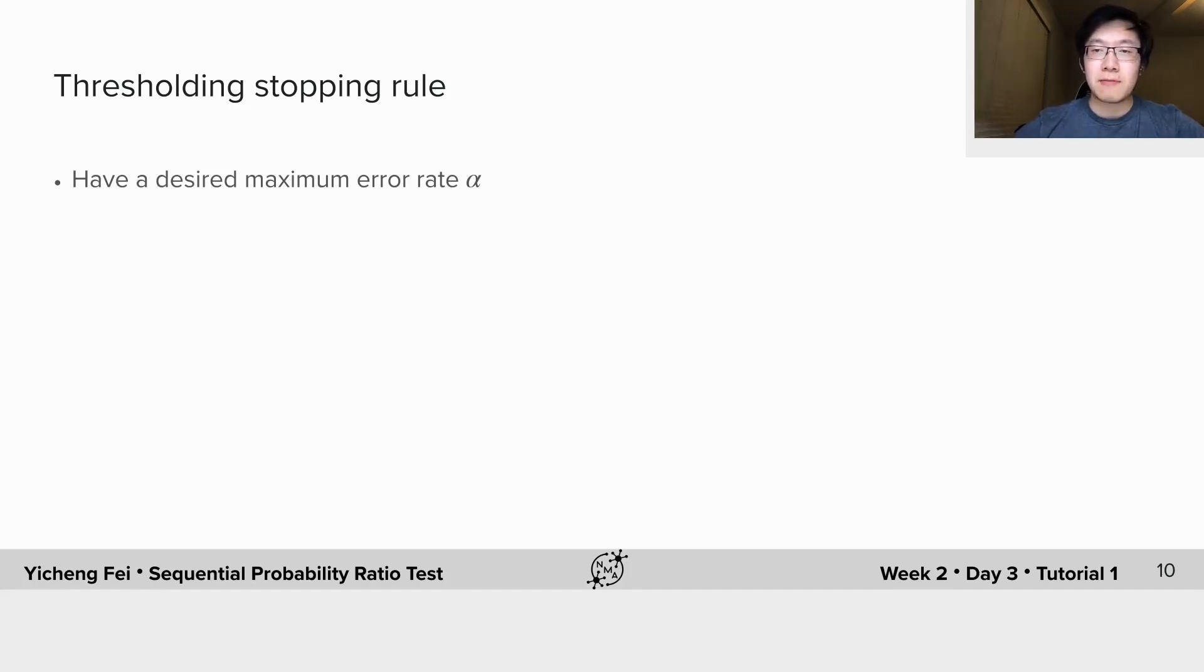This confidence level can be represented by a maximum error rate alpha, which is the probability to choose right when the true distribution is left or the other way around. Here we make it symmetric for simplicity.